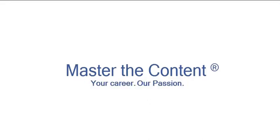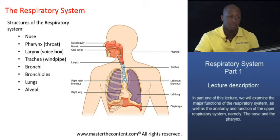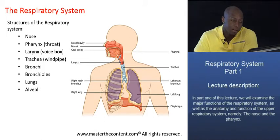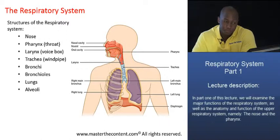Your career, our passion. The primary, the main structures of the respiratory system. So we have the nose, the pharynx, the larynx, the trachea, the bronchi, the bronchioles, the lungs, and the alveoli. Those are the main structures of the respiratory system.